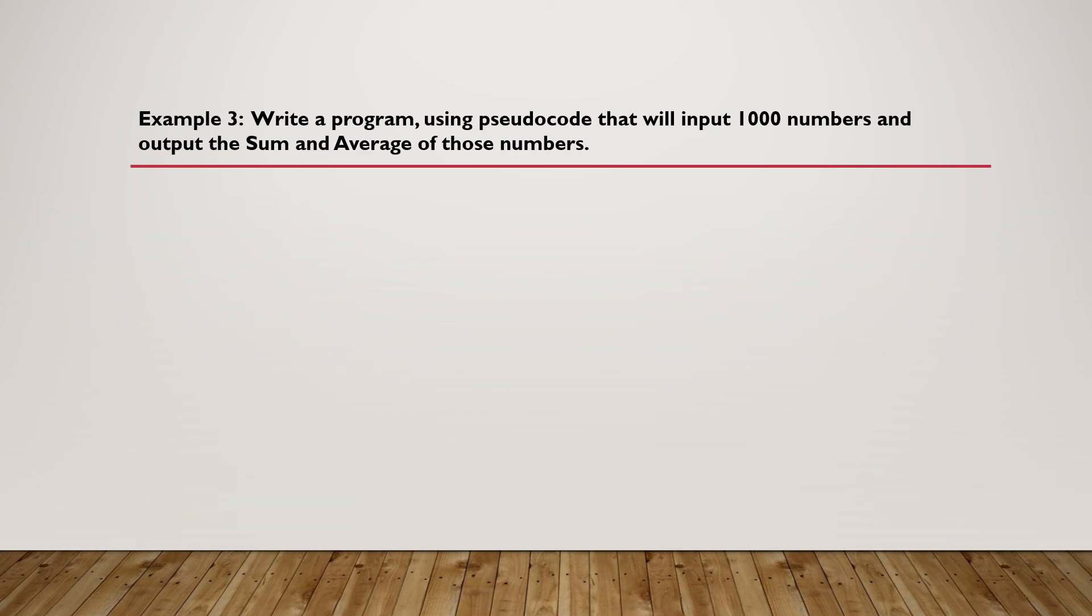Example number 3. Write a program with pseudocode that will input 1000 numbers and calculate the sum and average of those numbers. So in this case, again, we're going to initialize a count to 0, repeat input number.